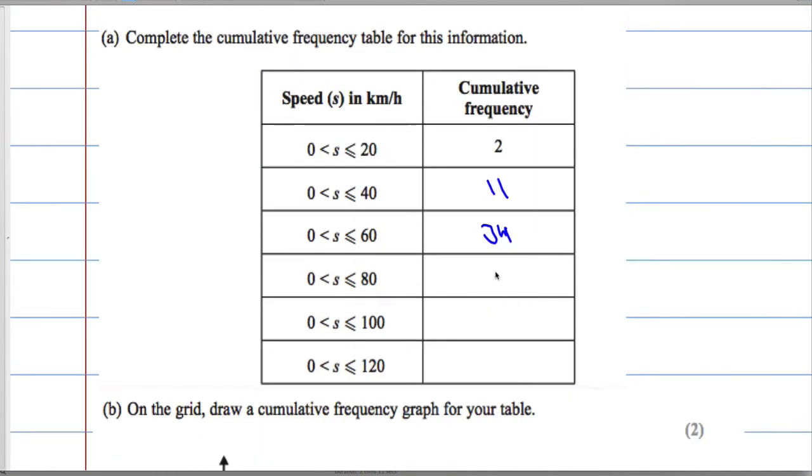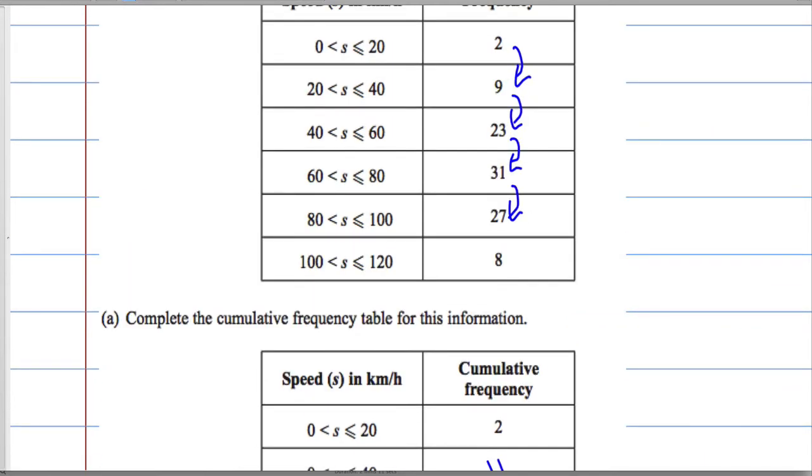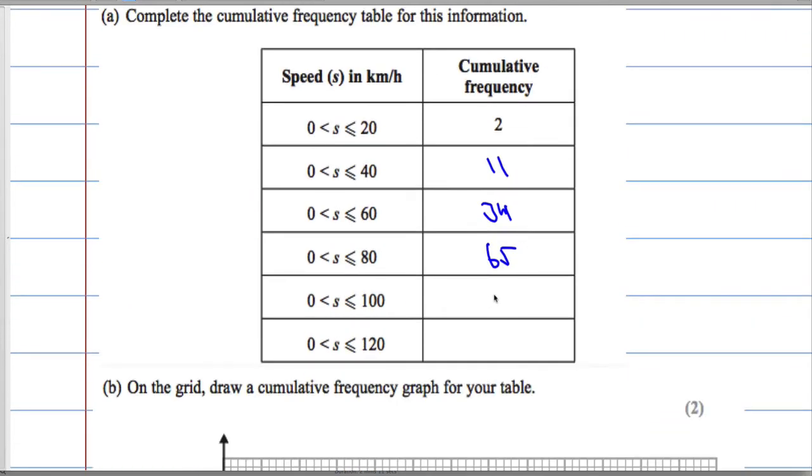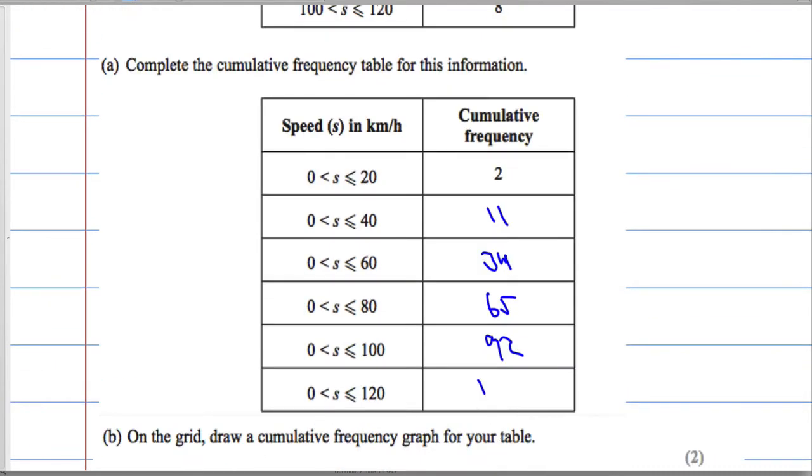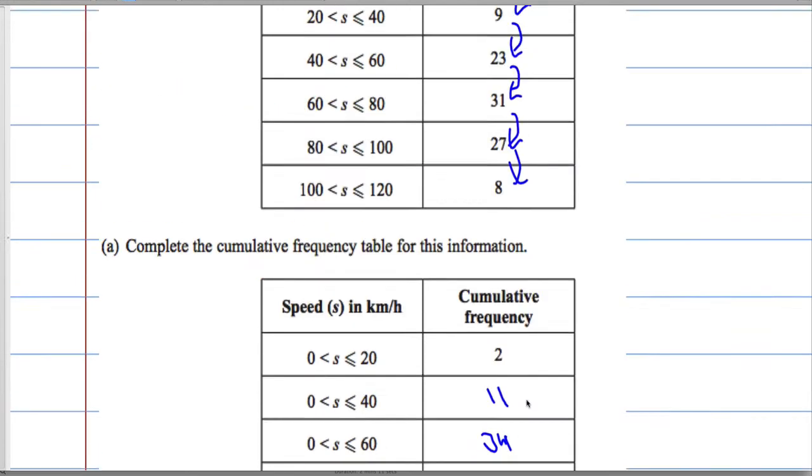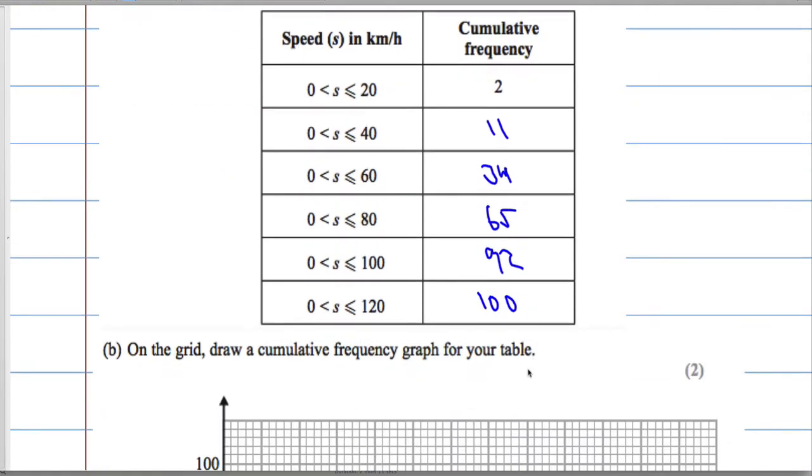Then add 31 to get 65, then 27 gives us 92, and adding the 8 gives us 100. The way to check you're right is that the final number should be the same as given in the question. There were 100 lorries, so the total cumulative frequency should be 100.